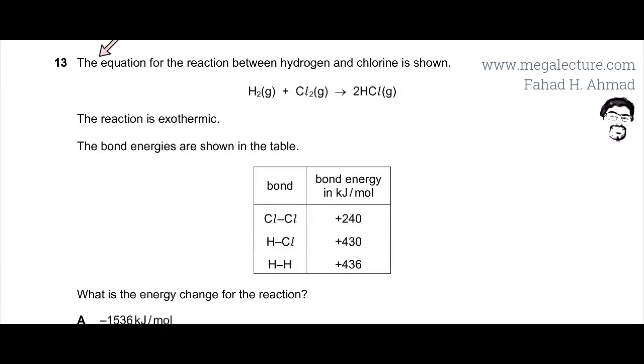The question shows the equation for the reaction between hydrogen and chlorine. H2 and Cl2 react to produce two molecules of HCl. We're told the reaction is exothermic and bond energies are shown in the table.